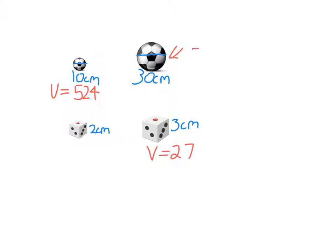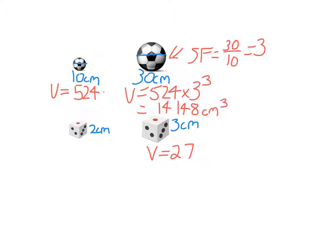So the scale factor here is clearly 30 divided by 10, which is 3. So the volume here will be 524 multiplied by 3 cubed. That's all you have to put in your calculator. And so the total volume will just be about 524 times 3 cubed, which is around about 14,148. In this case, centimeters cubed. Easy as that.